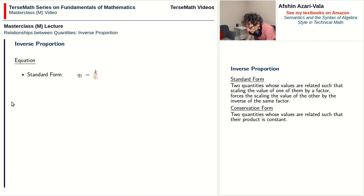Next we have the conservation form and this one says that there are two quantities whose values are related such that their product is constant. And if you think about it, you notice that it does make sense. If we have the situation where something doubles and the other gets divided by two, then multiplying them will cancel out those two effects. The conservation form is q2 times q1 equals a constant. And as usual you notice how the terminology makes sense. If something is constant then its value doesn't change, and in some sense we can say that the value is conserved.